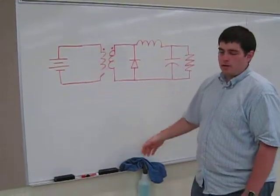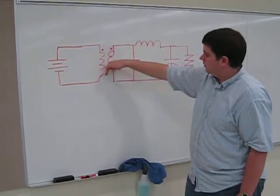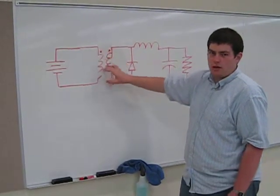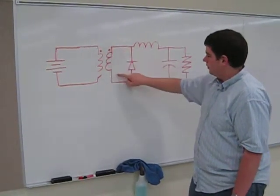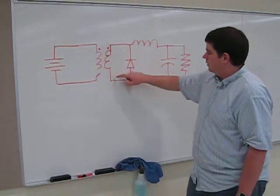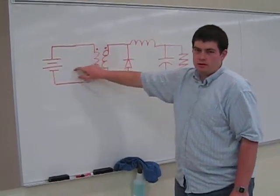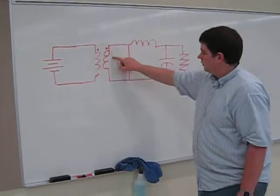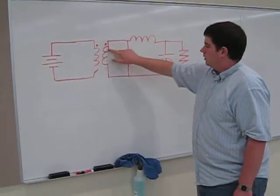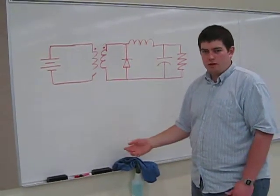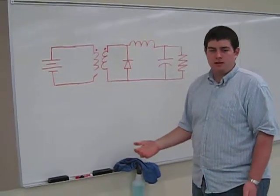One problem that looks like it would be a problem is if you've got current going through this inductor and you suddenly open the switch, there's no place for the current to go. But that's not a problem because it can just freewheel through this diode. Now, when you put voltage across this inductor, it builds up current during the on time. And then when you turn it off, it just freewheels through this diode. So there's no way to decrease the current through the transformer and it'll just build up and build up until your transformer is saturated and everything explodes.